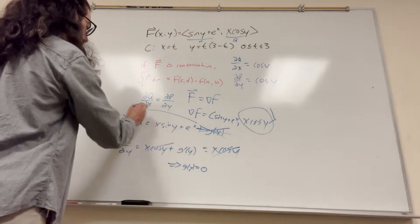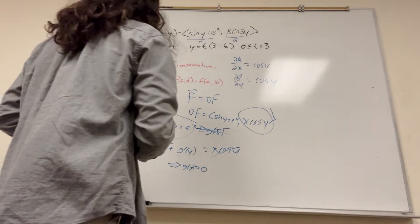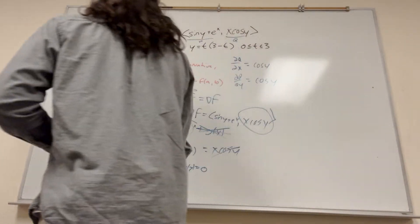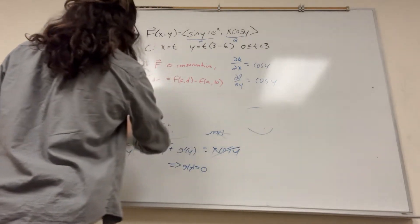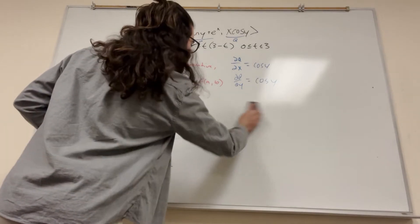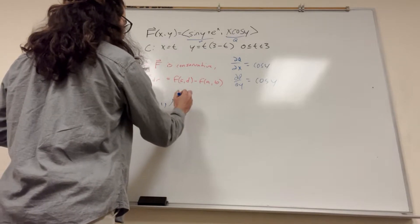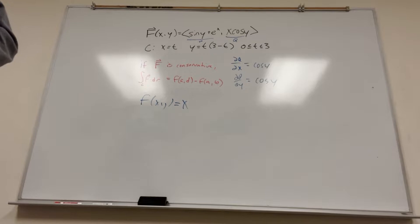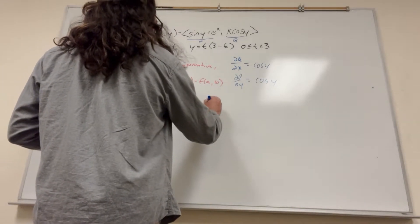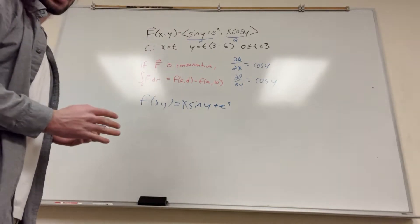So we can get rid of g of y because it equals zero, and our potential function f is x sine of y plus e to the x. There's also a plus c, but it's going to get canceled out — it'll be plus and then minus — so you can just ignore the plus c. Now let's use our fundamental theorem of line integrals.